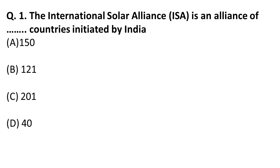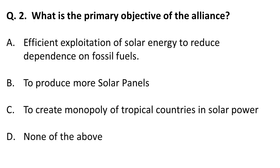The International Solar Alliance is an alliance of how many countries initiated by India? The exact number is 121. So the International Solar Alliance is an alliance of 121 countries initiated by India, and mostly these countries are from the tropical region — remember this.